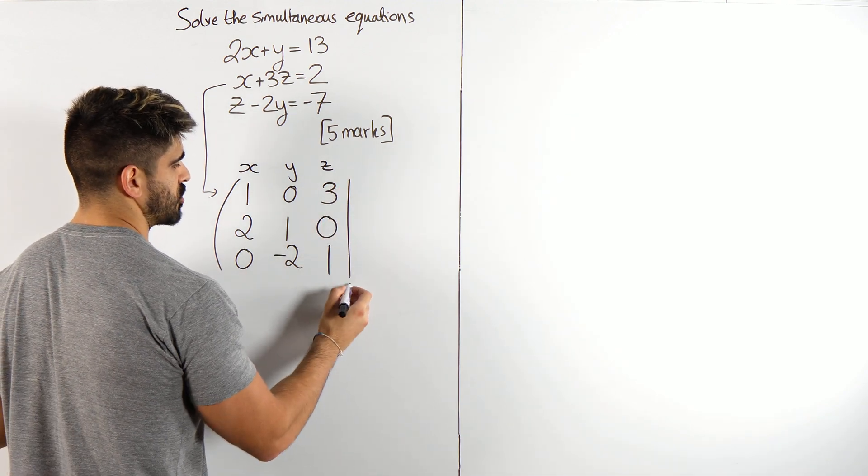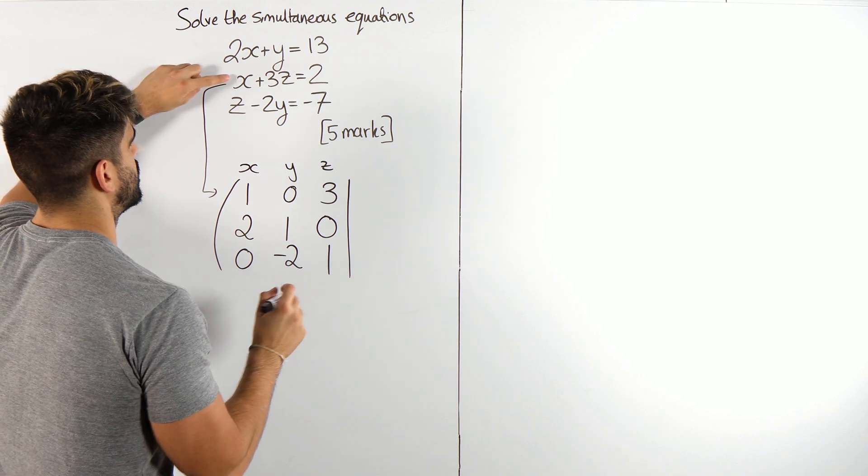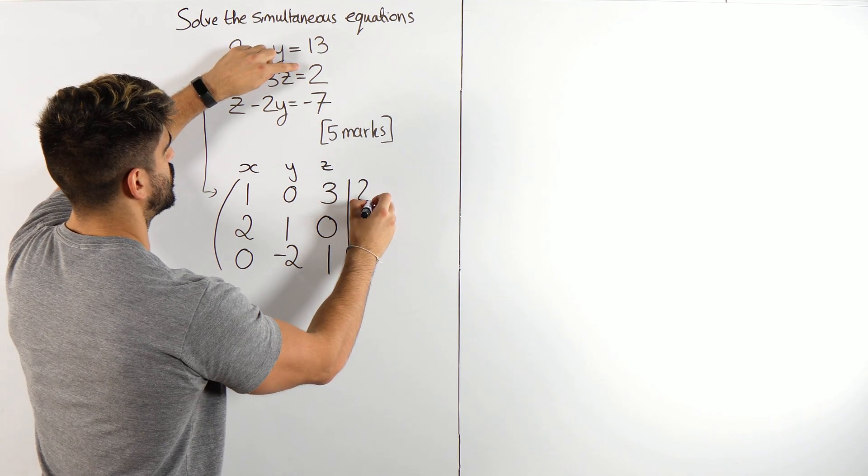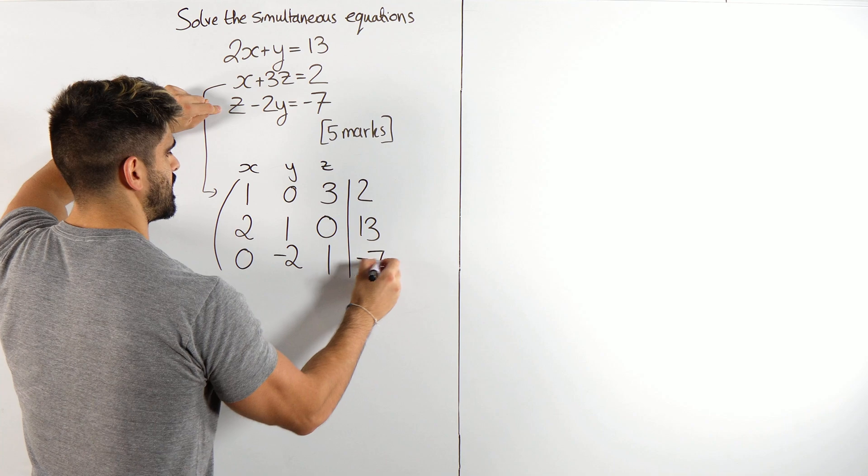We draw a vertical line, which represents the equals, and then we have, be careful, what did I do? I wrote the second one first, so it equals 2, then I did this one, 13, and then this one, minus 7.